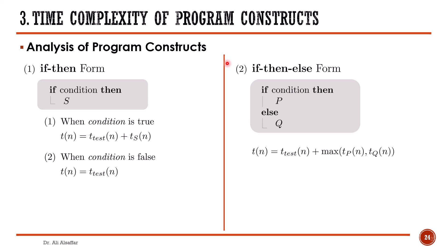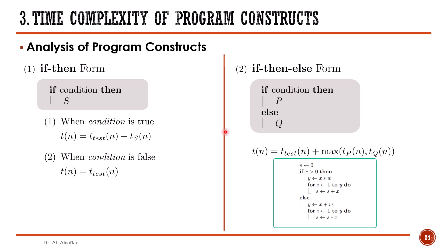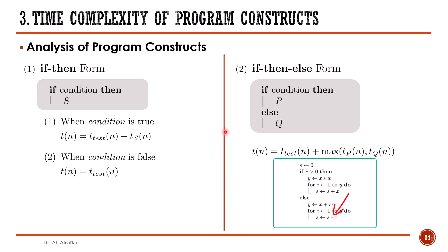Since you need to find the time complexity of both statements P and Q, suppose you want to apply the quick analysis. It is not necessary that the basic operation is the same when analyzing statements P and Q — that depends on the content of both statements. For example, if the condition is true, we have an assignment with multiplication and a for loop with addition; the basic operation is addition since it executes more. If the condition is false, we have an assignment with addition and a for loop with multiplication; the basic operation is multiplication since it executes more.